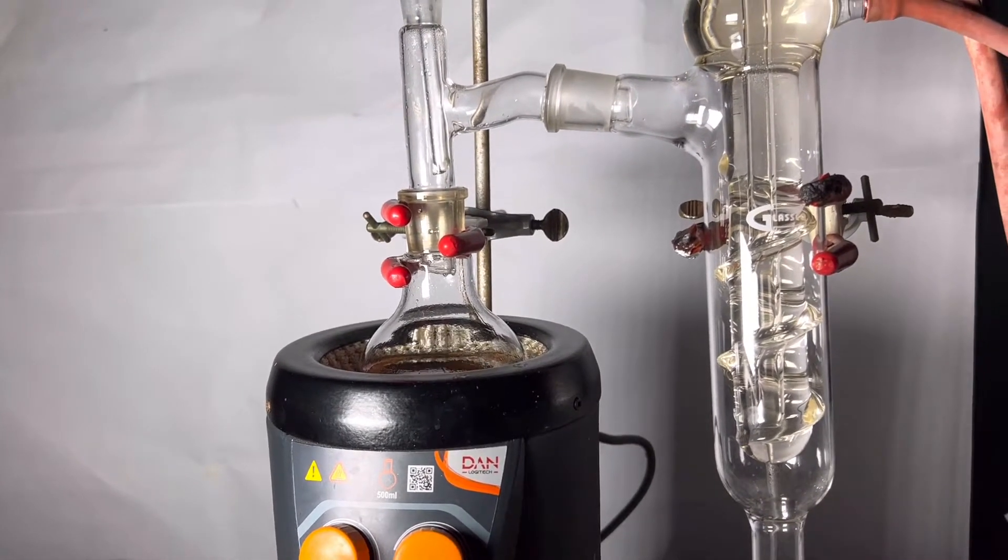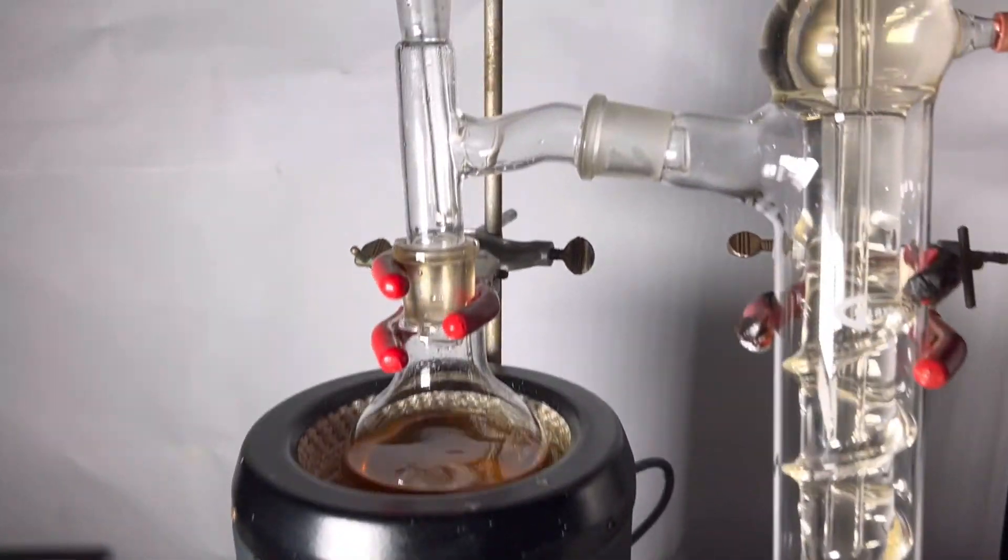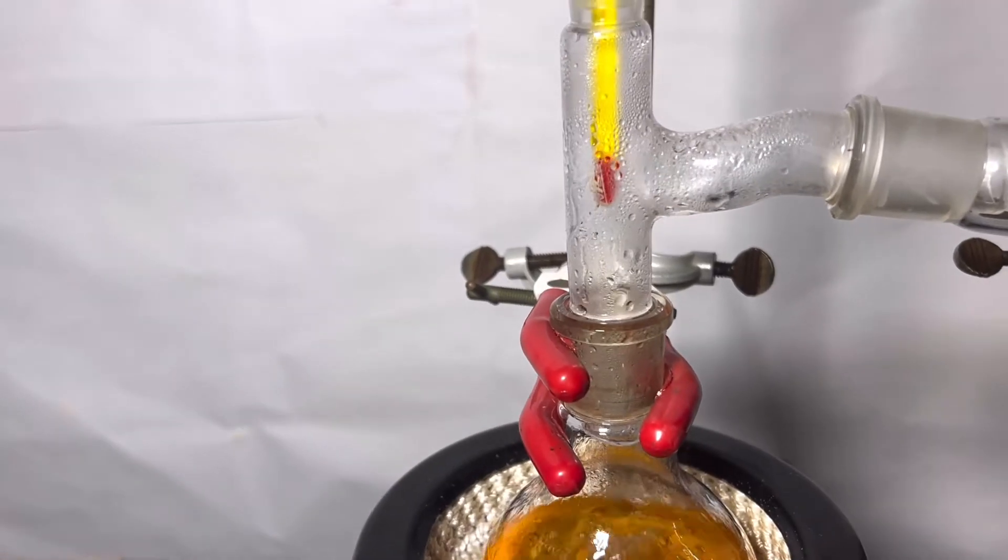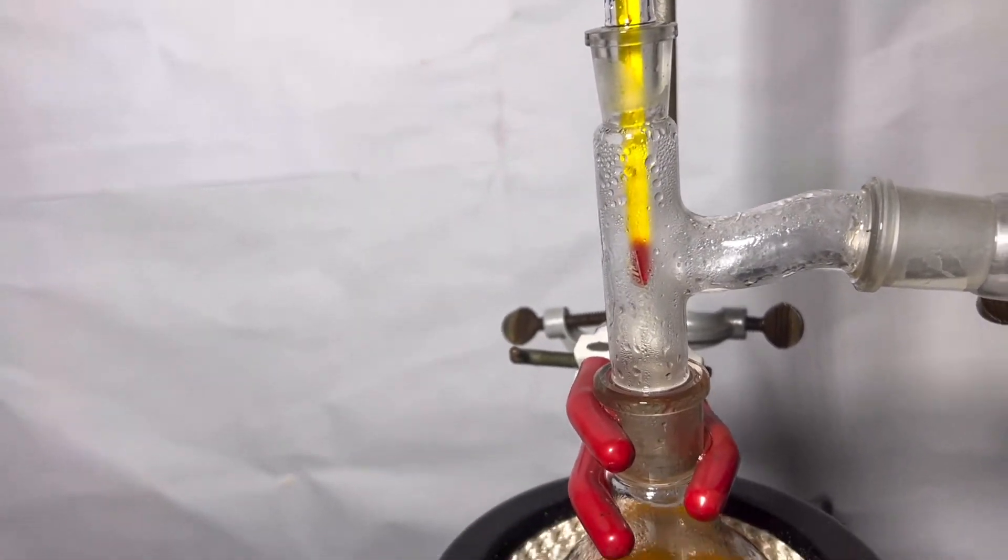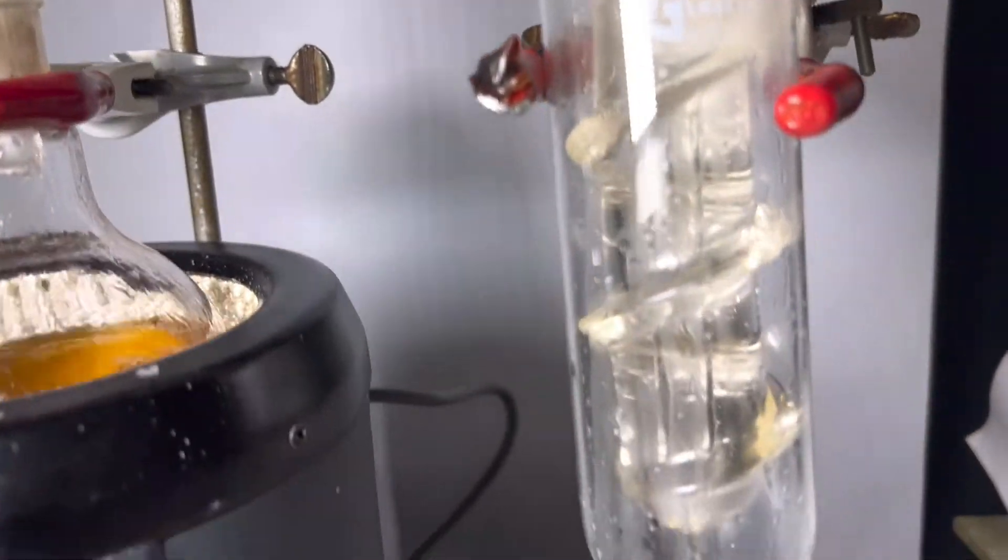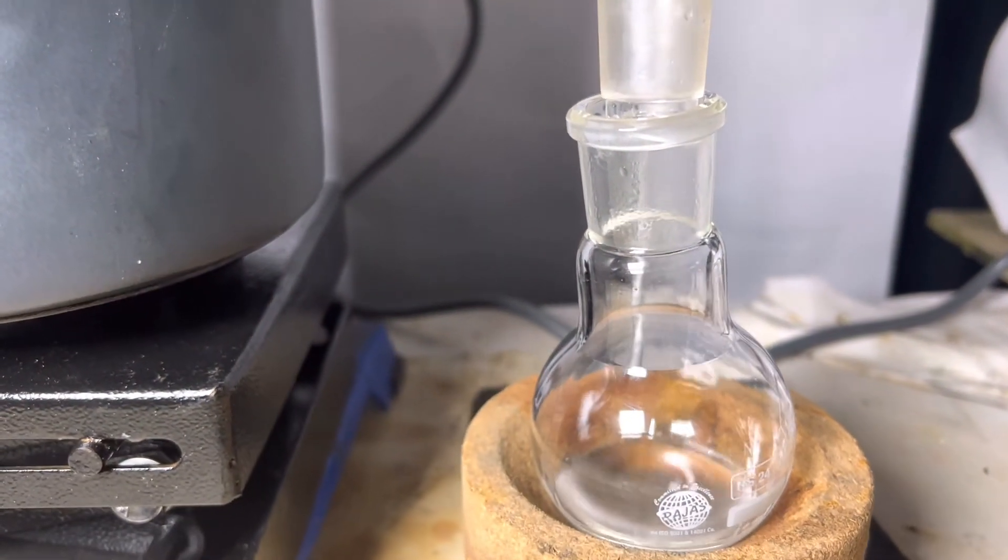Valeronitrile distills over with water. We can clearly see as the oily droplets pass over the distillation. By about 20 minutes almost all of the valeronitrile distills over.